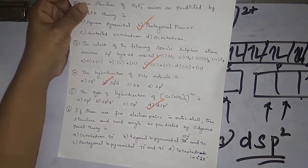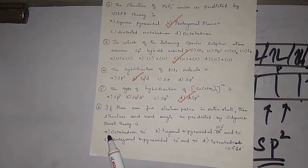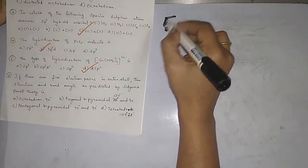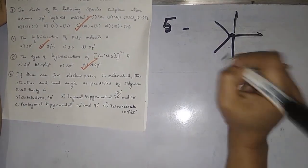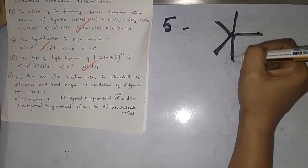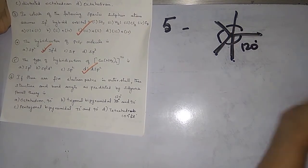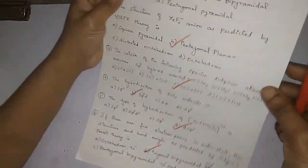Next question: if there are five electron pairs in the outermost shell, what is the structure and bond angle as predicted by Sidgwick-Powell theory? With five electron pairs and five bonded atoms, the shape is trigonal bipyramidal. The bond angles are 120° (equatorial) and 90° (axial). The answer is option B.